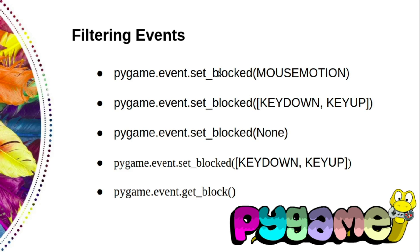If you pass in a list of event types, all those events will be blocked. For example, to disable key down and key up events, we can put these two events in a list and pass it as a parameter to set_block. If you want to unblock all the events, pass the value None to set_block, and all events will be allowed or unblocked.